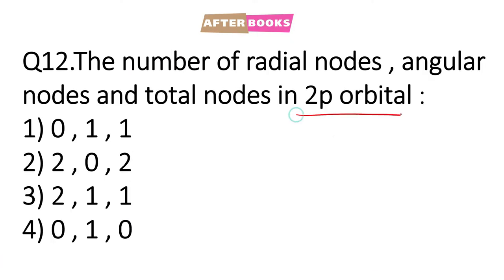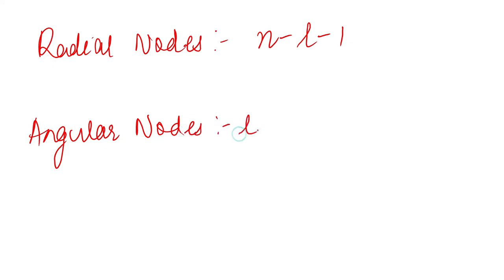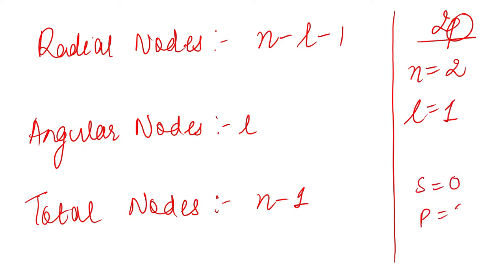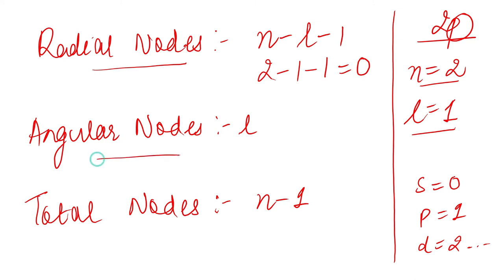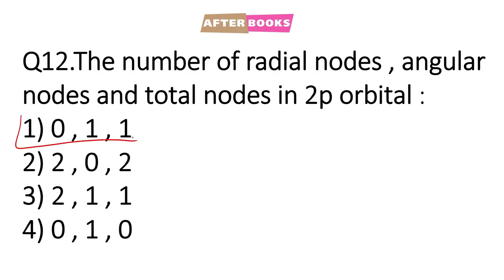Question number 12: For the 2P orbital, we need to calculate radial nodes, angular nodes, and total nodes. Radial nodes = n − l − 1. Angular nodes = l. Total nodes = n − 1. For 2P orbital, n = 2 and l = 1 (since s=0, p=1, d=2). So radial nodes = 2−1−1 = 0, angular nodes = l = 1, total nodes = 2−1 = 1. Answer is 0, 1, 1 — option number 1.